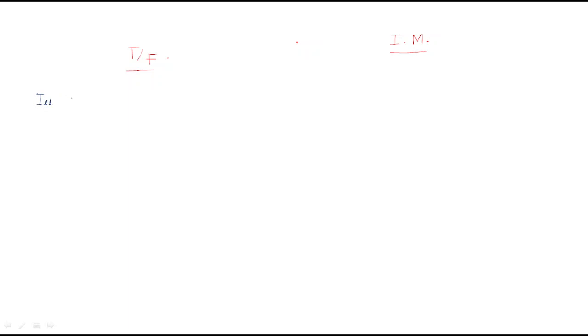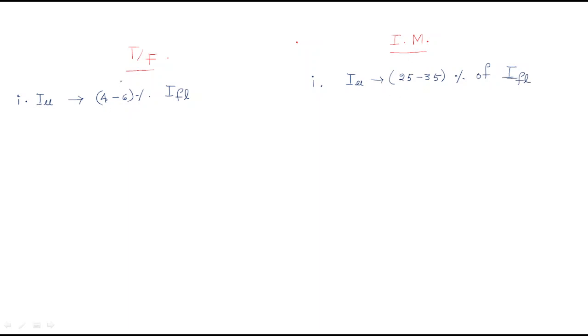The magnetizing current of the transformer is 4 to 6% of the full load current. In the induction motor, the magnetizing current is very high — that is 25 to 35% of the full load current. The transformer requires only 4 to 6% because it has no air gap, whereas the induction motor requires 25 to 35%.